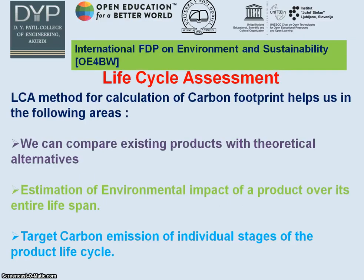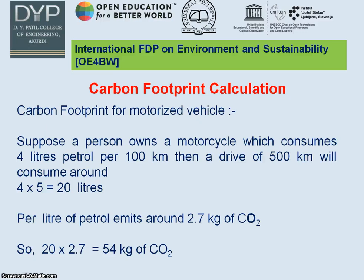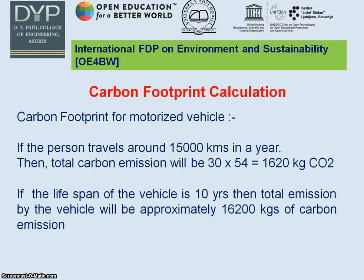The life cycle assessment method for carbon footprint calculation helps us compare existing products with theoretical alternatives, estimate environmental impact over a product's entire lifespan, and target carbon emissions at individual stages of the product life cycle. For example, a person with a motorcycle consuming 4 litres per 100 km who drives 500 km consumes 20 litres. Per litre carbon dioxide emission for petrol is 2.7 kg, so 54 kg of CO₂ is emitted. Travelling 15,000 km per year results in approximately 1,620 kg total carbon emission, and over a 10-year vehicle lifespan, total emission is 16,200 kg — which can be saved by distributing e-vehicles.